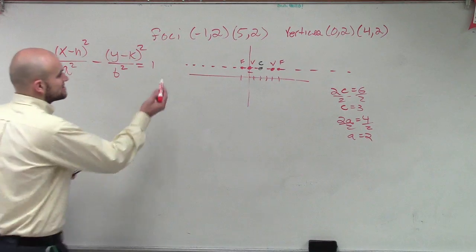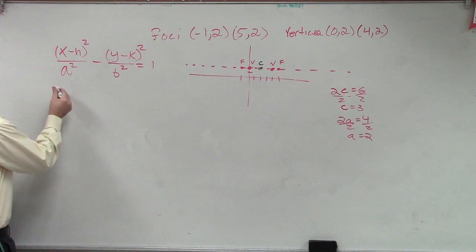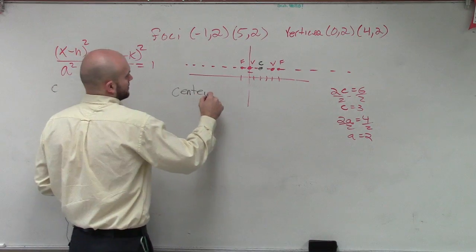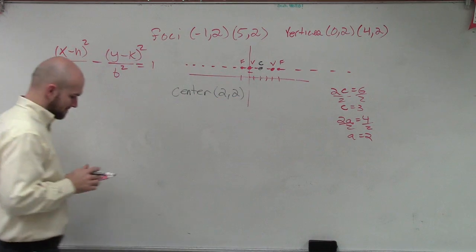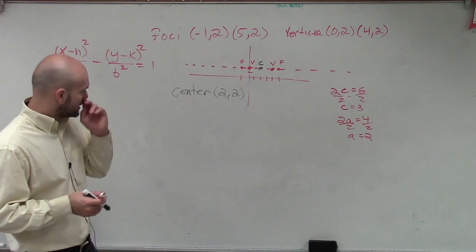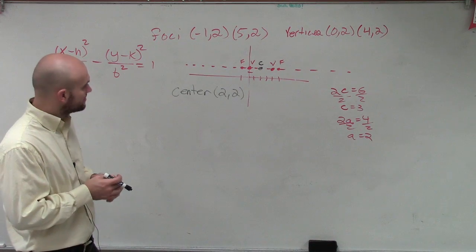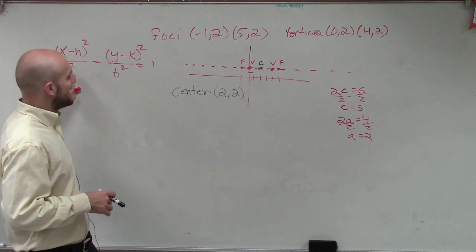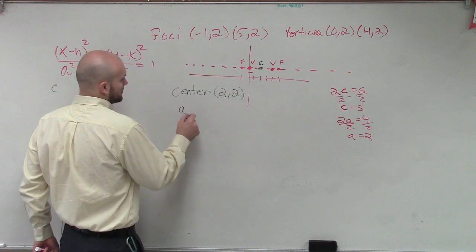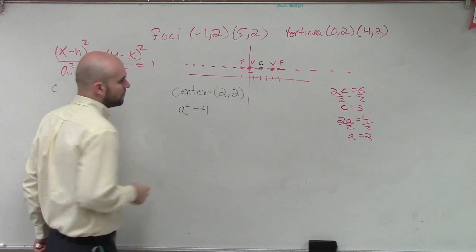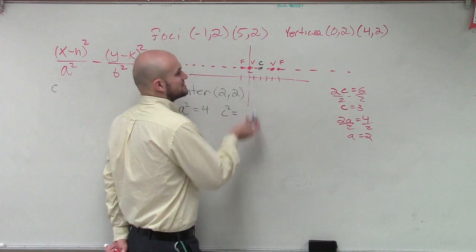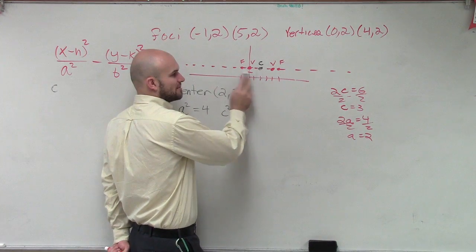So, now we know our center. Center is 2 comma 2. Right? Very, very good. Now, let's go and take a look at it. So, we know the center is 2 comma 2. The next thing is we need to figure out what our a is. Well, we talked about a, or sorry, a squared. We know a is 2. So, therefore, a squared is going to equal 4. Now, do we know what b squared is? No. But, do we know what c squared is? C squared is now going to be the distance. Remember here. So, c is 3. So, c squared equals 9.